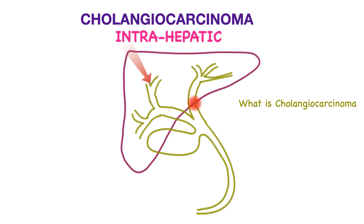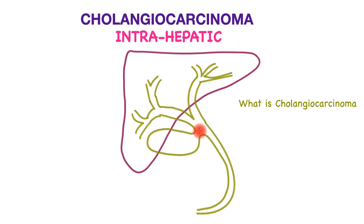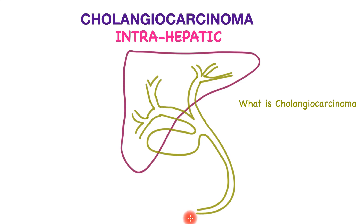This is the left main bile duct and this is the right main bile duct. This area is called the hilum. Connected to the bile tube is the gallbladder, which stores the bile, and then the bile is secreted down into the small bowel to help in digestion of fat.